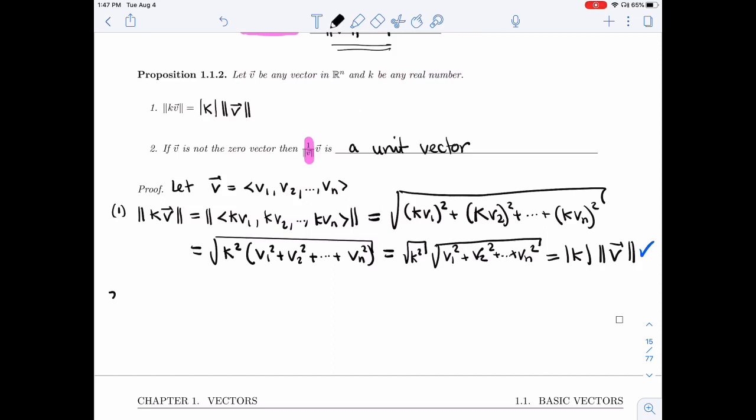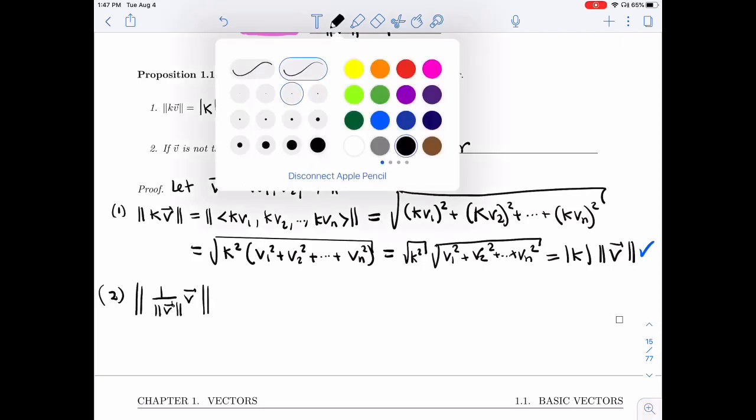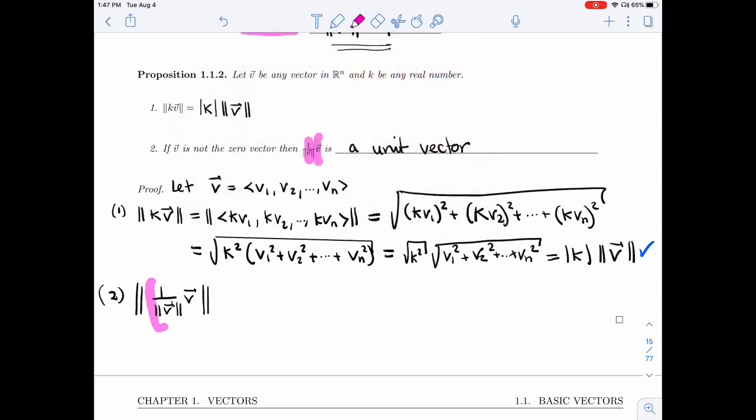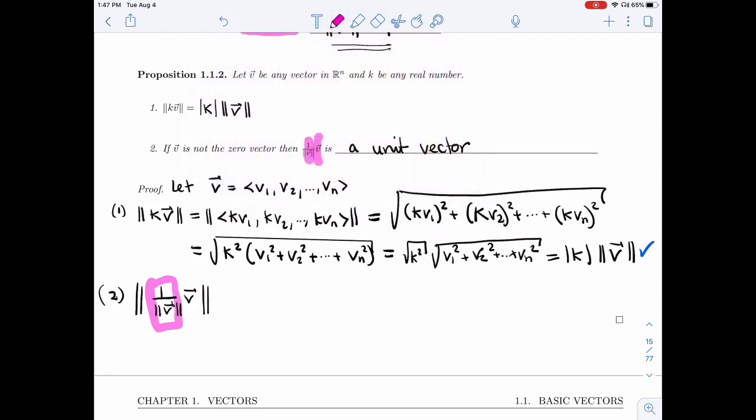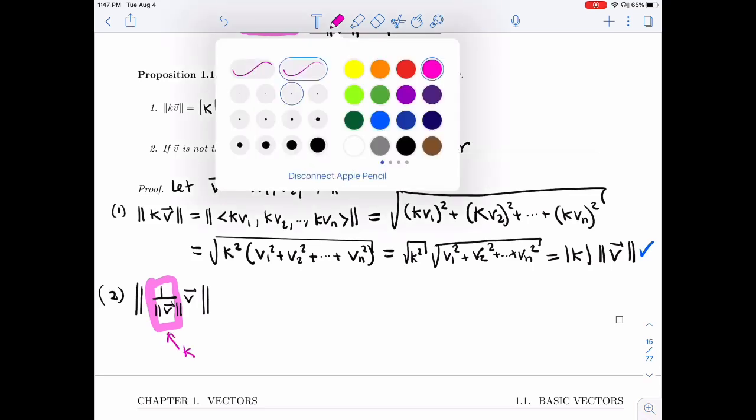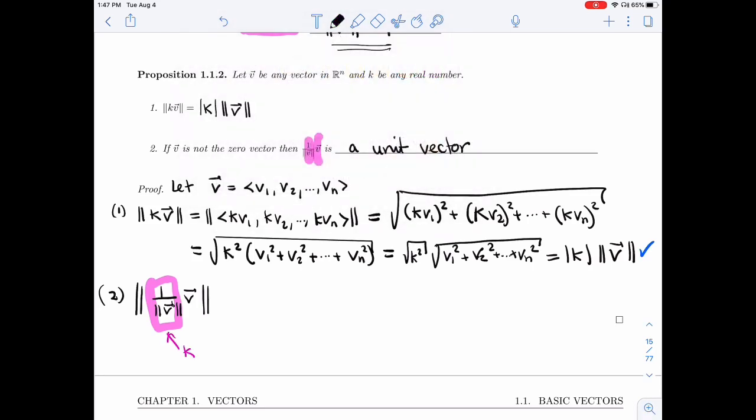All right, second, I want to show that this vector here is a unit vector. So I want to look at its length. Now, this here, 1 over length of V is just a number. So I'm going to call it K. So I'm going to apply property 1 that we just proved to this vector with that value of K.